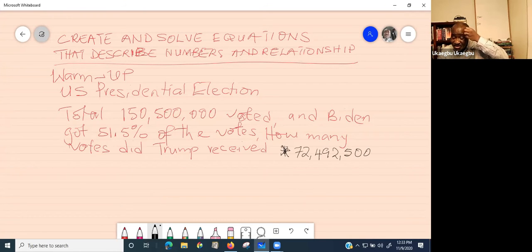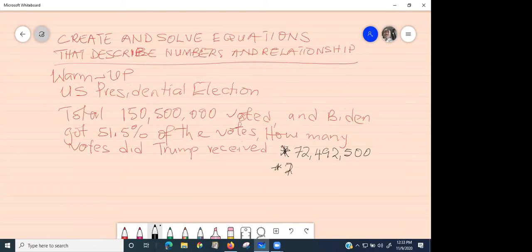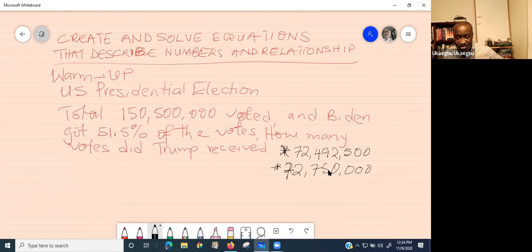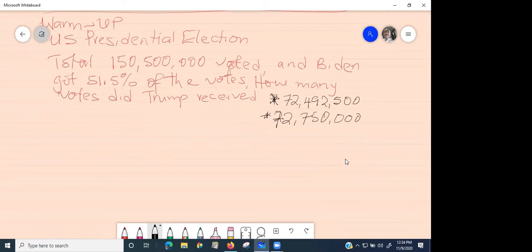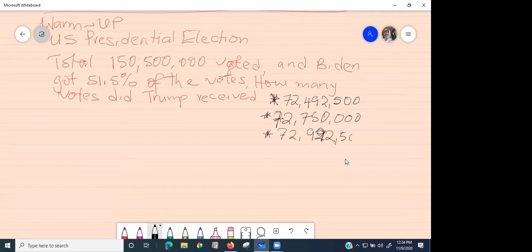Did anybody get a different number? I got a different number: $72,750,000. Who got something else? I got $72,992,500.